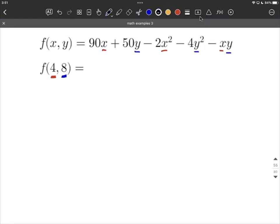It really comes down to that, and then some orders of operations. So this is going to work out to be 90 multiplied by 4 plus 50 multiplied by 8 minus 2 times 4 replaces the x again. It's going to get squared minus 4 times 8 is going to replace this y,